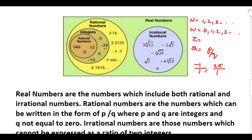Then comes a separate group called irrational numbers. Irrational numbers are those numbers which cannot be written in the form of p by q. For example, root 2, root 3, root 5, and pi are all irrational numbers. Rational numbers are terminating decimals or non-terminating recurring decimals, and irrational numbers are non-terminating non-recurring decimals.